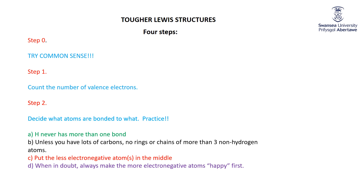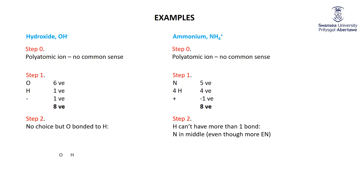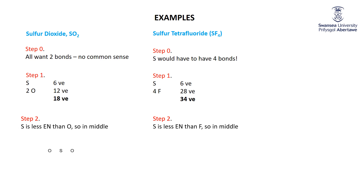Keep those guidelines in mind as we go through our examples. For hydroxide with eight valence electrons, there's no choice but to bond the oxygen to the hydrogen — there are only two atoms, so the connectivity is oxygen bonded to hydrogen. For ammonium: hydrogen can't have more than one bond, so nitrogen goes in the middle of the four hydrogens — even though nitrogen is more electronegative. For sulfur dioxide: sulfur is less electronegative than oxygen, so it goes in the middle. And for SF₄, sulfur is less electronegative than fluorine, so again the sulfur goes in the middle.